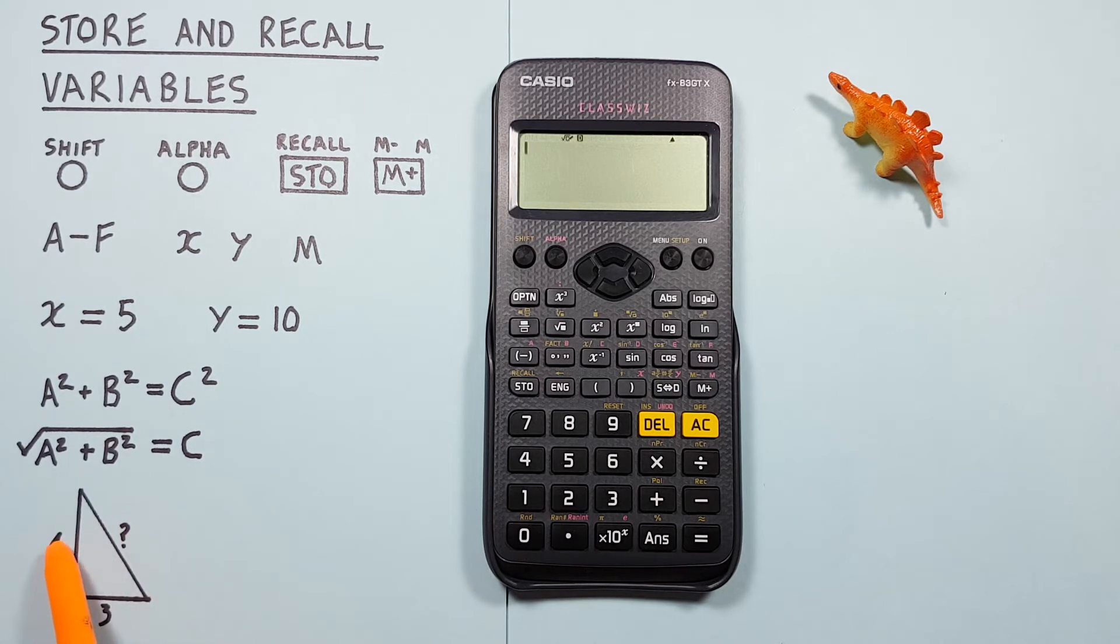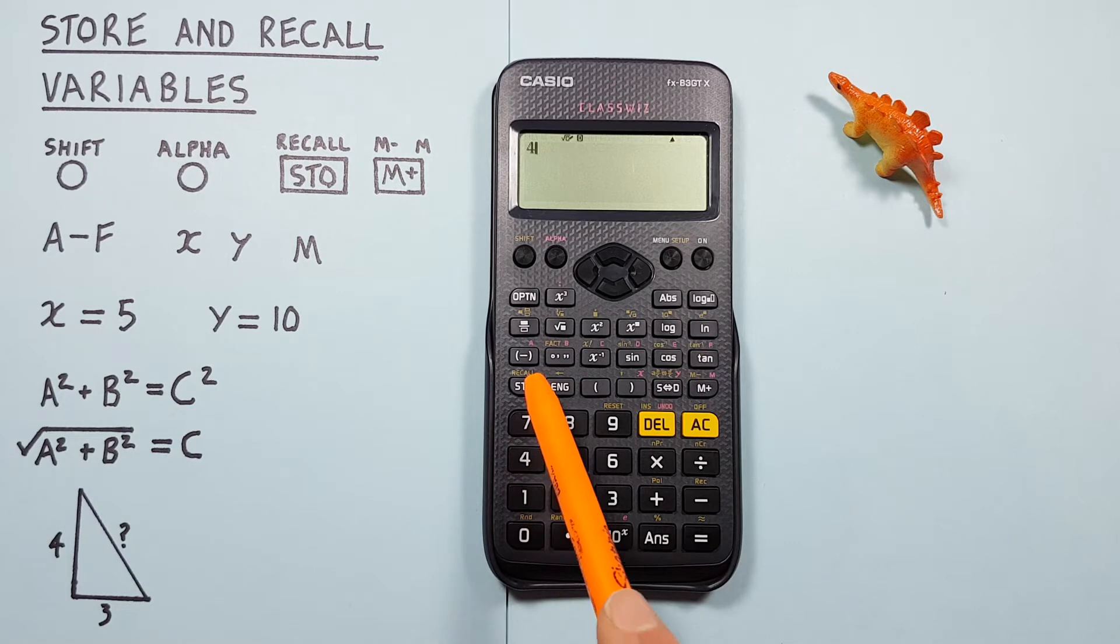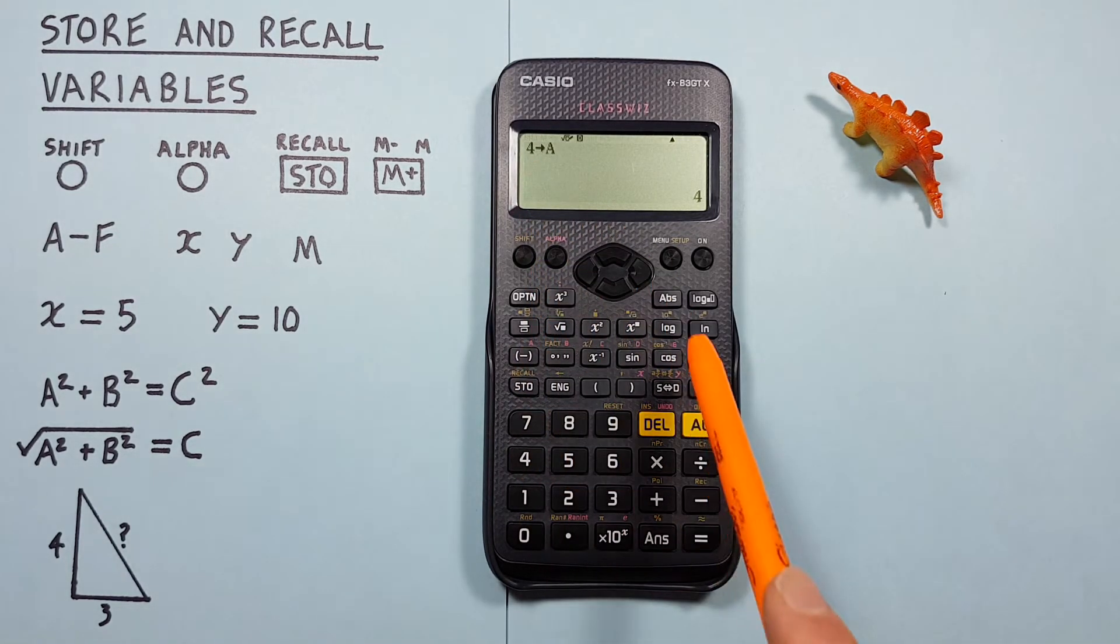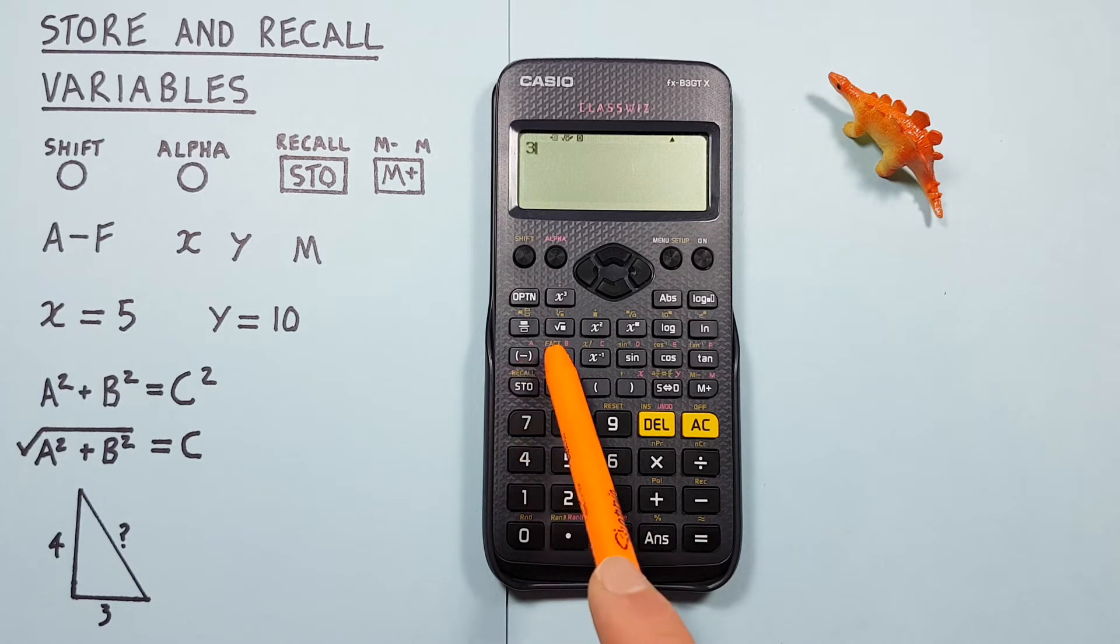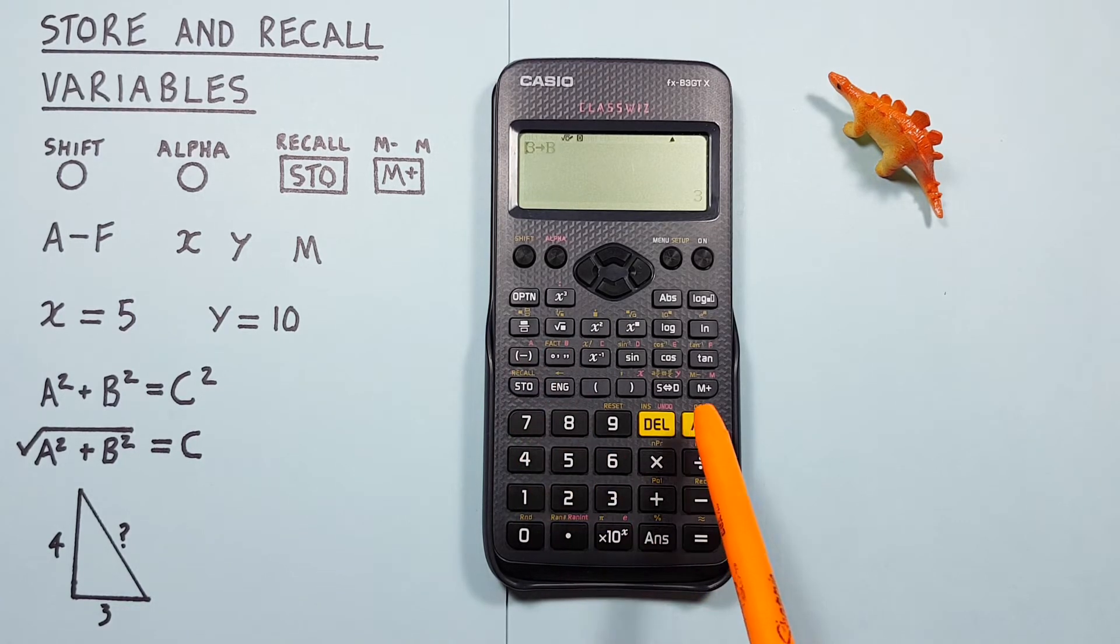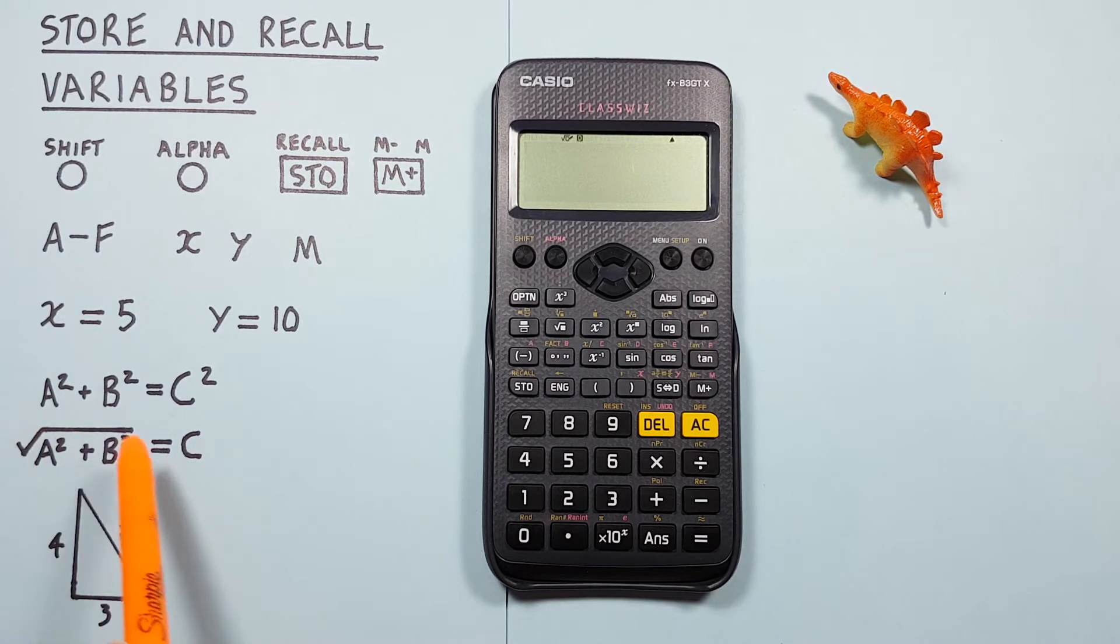If we call this side A and this side B and want to solve for C, we can start by storing the 4 as our A. So we place 4 on the screen, press store A. And this side as our B, so 3 as B. We now have our two sides stored and we can use them to solve for C.